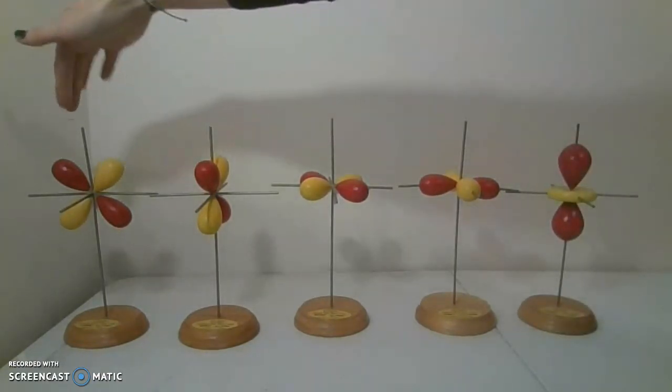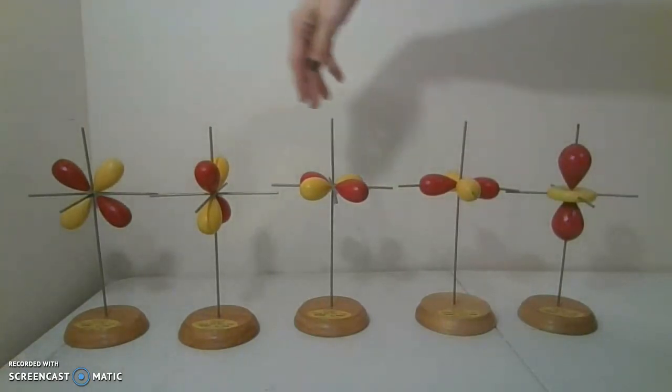All right, so we have our d-orbitals. There are five different kinds holding 10 total electrons in that layer.